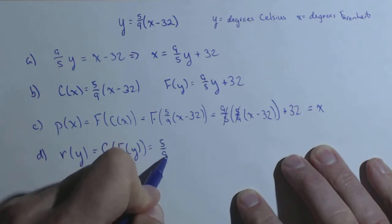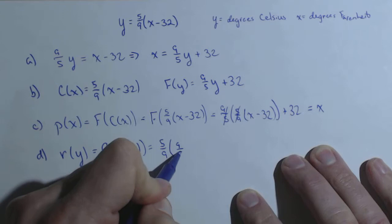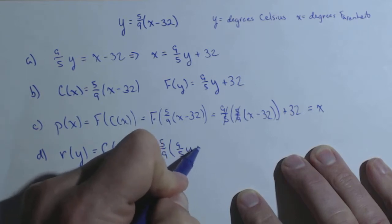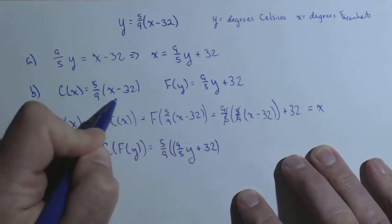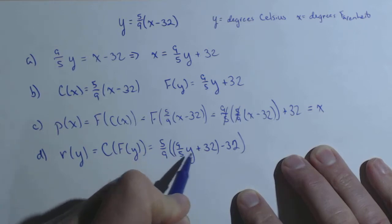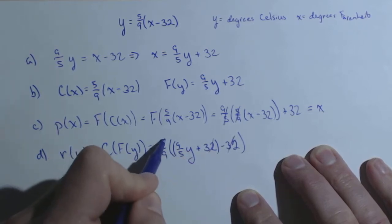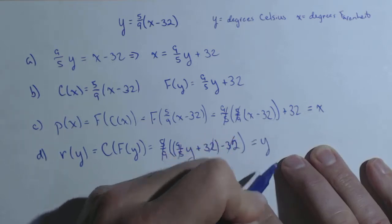So now we're putting f into c. You might already have an expectation of what's going to happen. And this is a property of inverse functions, 9 fifths y plus 32. So I put that in for my x here, minus 32. First thing, these 32s are going to cancel. Then the 5 ninths and the 9 fifths cancel, and I get just y.